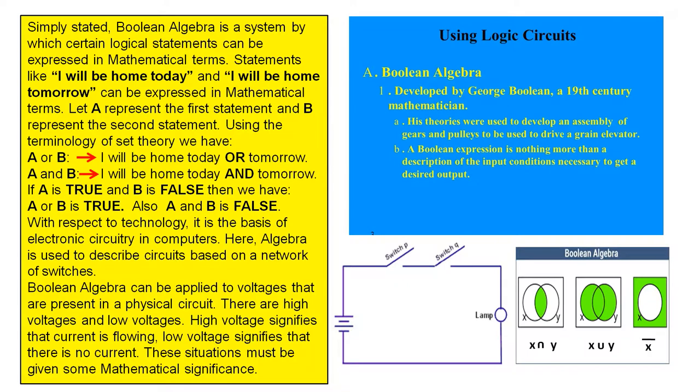Boolean Algebra can be applied to voltages that are present in a physical circuit. There are high voltages and low voltages. High voltage signifies that current is flowing, low voltage signifies that there is no current. These situations must be given some mathematical significance.